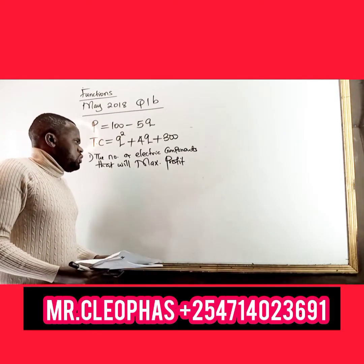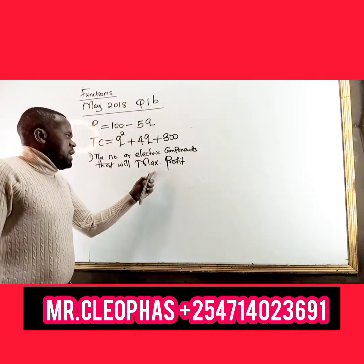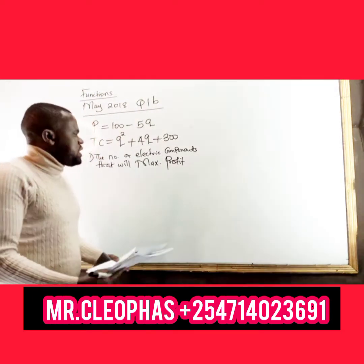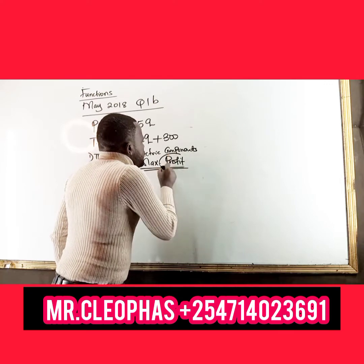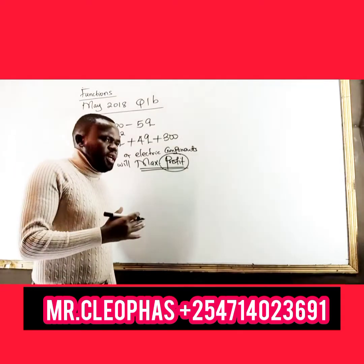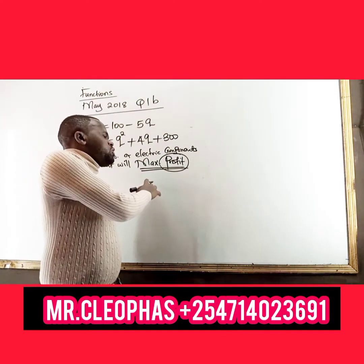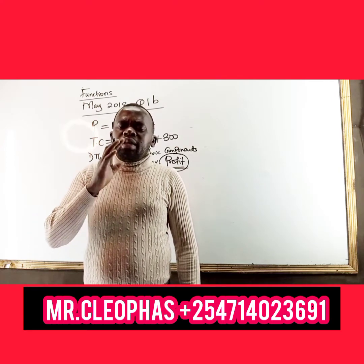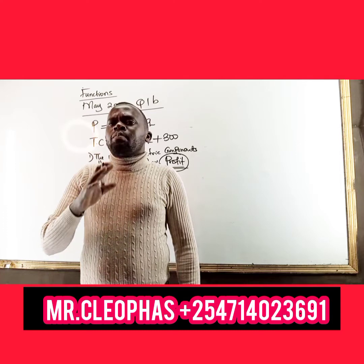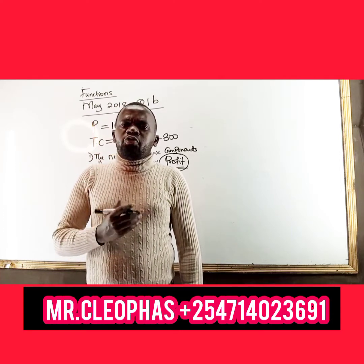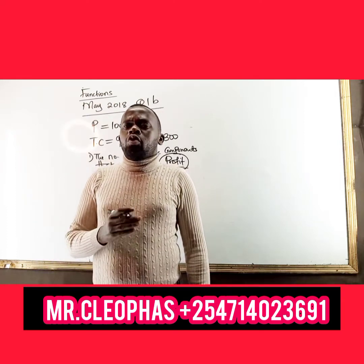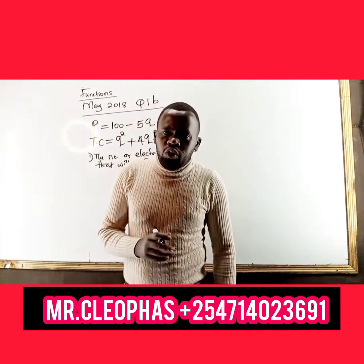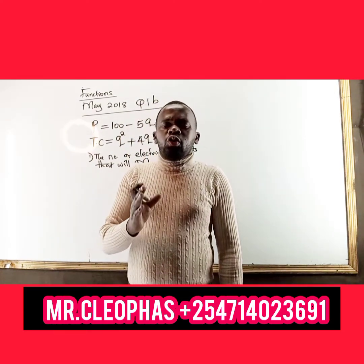Under this topic, whenever you are given such functions and required to get the number of electric components, the number is the quantity — Q is the quantity or the units. To maximize profit, the first thing you need is to get the profit function. After getting the profit function, you differentiate it. It will depend on whether after differentiating you have a quadratic equation or you can solve for Q directly.